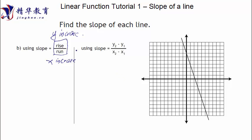Maybe just talking like that you're confused, so let's look at a question. Let's try to find out how much the slope of this line is. We're going to find two points. Let's find a point here — this point. And then the other point, maybe we can use this one. Now we have two points. Let's say this is point one and this is point two.